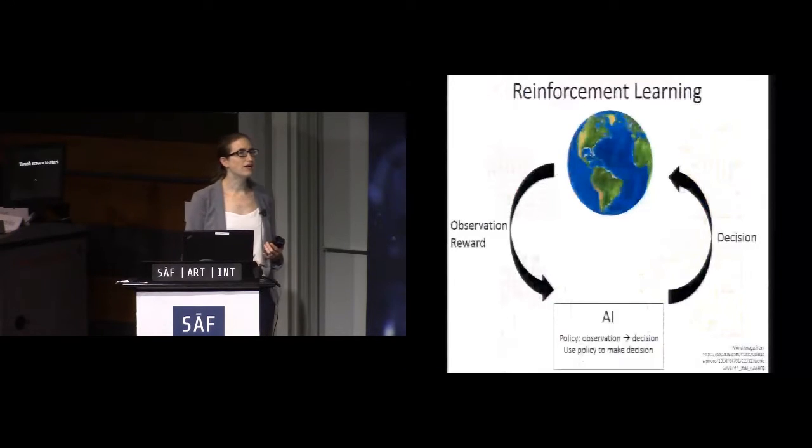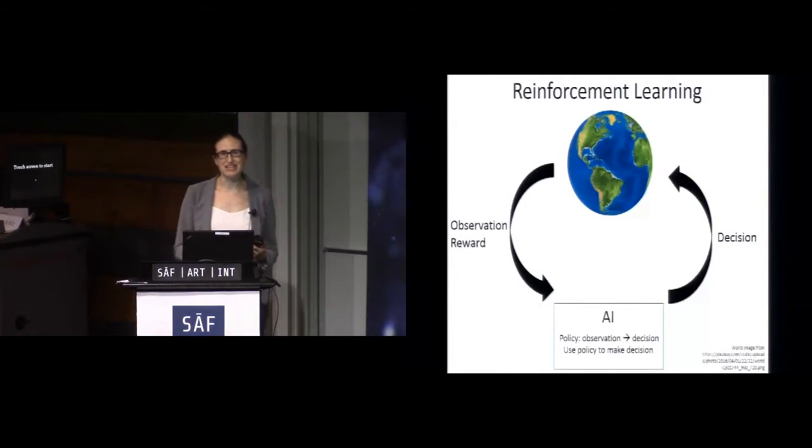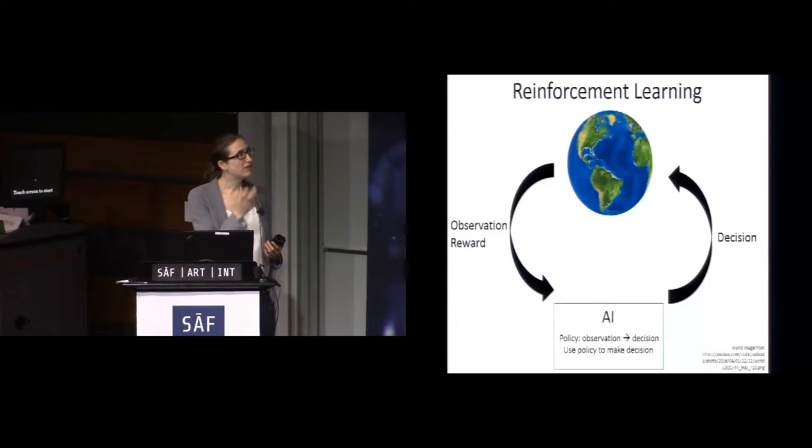One popular framework for doing this is known as reinforcement learning. The basic idea is that we're going to have an AI agent or an AI algorithm that is making decisions, and those decisions affect the state of the world. This could be a robot that's trying to grasp something or a tutor that's trying to teach someone something. When it affects the state of the world, we're now going to get back new observations and maybe a reward signal about how good those decisions were.